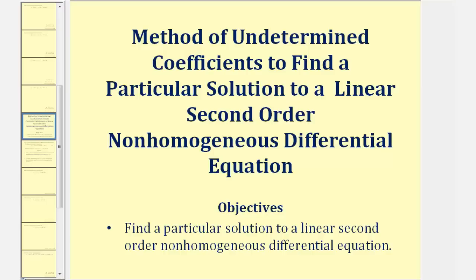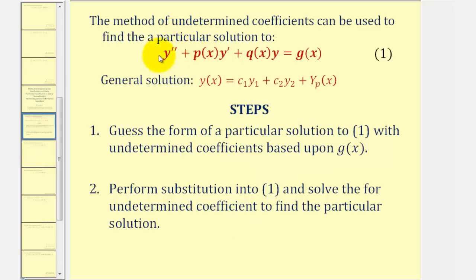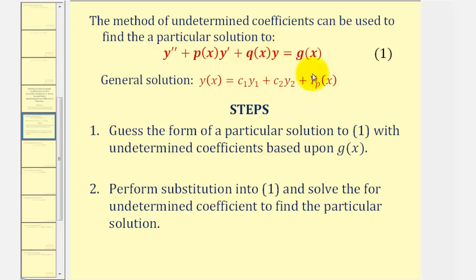Welcome to an example on how to use the method of undetermined coefficients to find a particular solution to a linear second order non-homogeneous differential equation. We're looking for a particular solution to a differential equation that fits this form, and from our previous lesson, the general solution fits this form given by y of x, where c sub one times y sub one plus c sub two times y sub two comes from the general solution to the corresponding homogeneous equation, and y sub p is a particular solution.